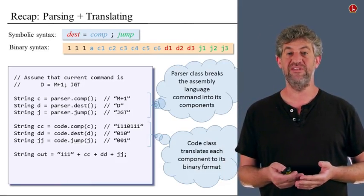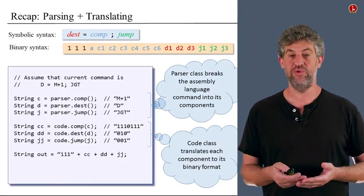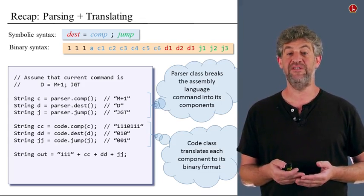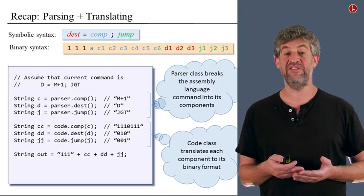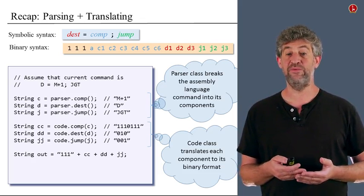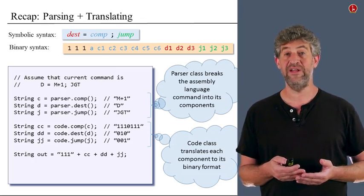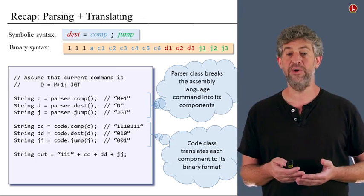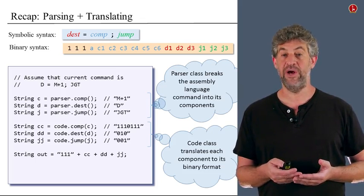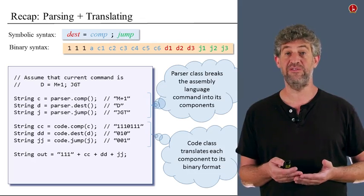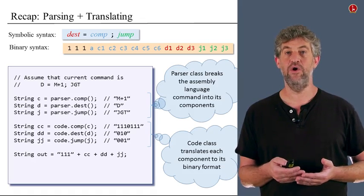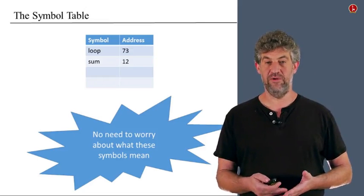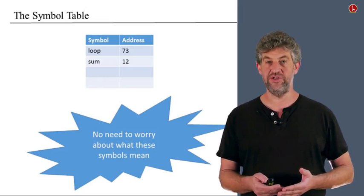Let us see an example of how to use the parser object and the code object to do that translation. Our parser object gives us access to each one of the parts — the computation, destination, and jump parts. We take each one and ask the parser for the string corresponding to each piece. Once we have these three strings, we go to the code object and ask it to translate each one separately according to its tables. Now we have the machine code for each part. To put them together, we simply concatenate all of them with the three ones on the left, giving us the complete translation from assembly language to binary.